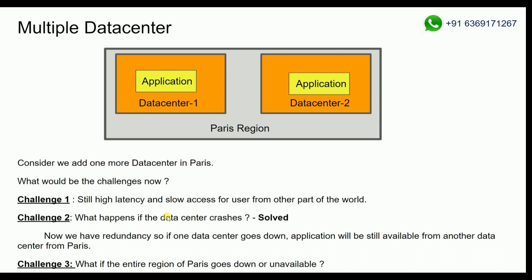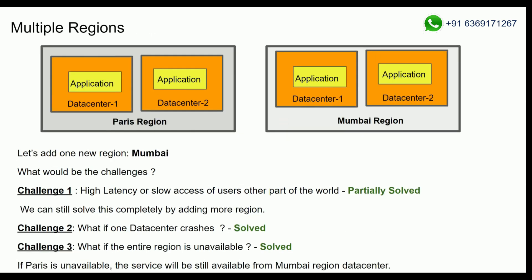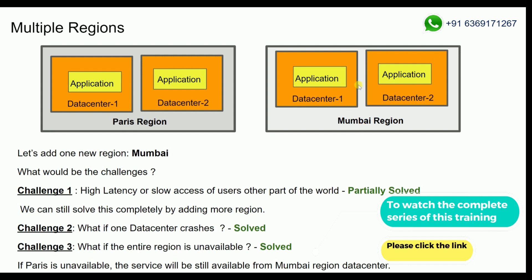So how do we address Challenge 3? What do we do? We should deploy our application in multiple regions. We deploy our application in Paris in two data centers, and also in the Mumbai, India region with the same application. Now, if the entire Paris region goes down, the application will still be available from the Mumbai region.